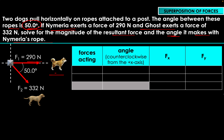We set up a table to stay organized. We list the forces acting on the post, the angle each force makes with the positive x-axis, and the Fx and Fy components. Starting with Nymeria: the force is 290 Newtons, and the angle with the positive x-axis is zero degrees, since her rope lies exactly along it. Angles are measured counterclockwise from the positive x-axis — this is just convention.